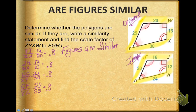So I know all the sides are in proportion. Therefore, these figures are similar because the sides are in proportion and all of the corresponding angles are congruent. And remember, that is the definition of similar figures.